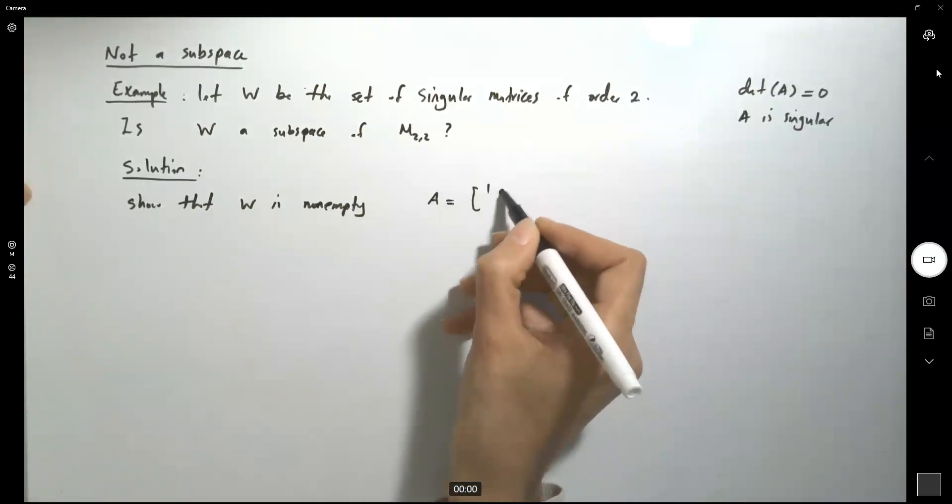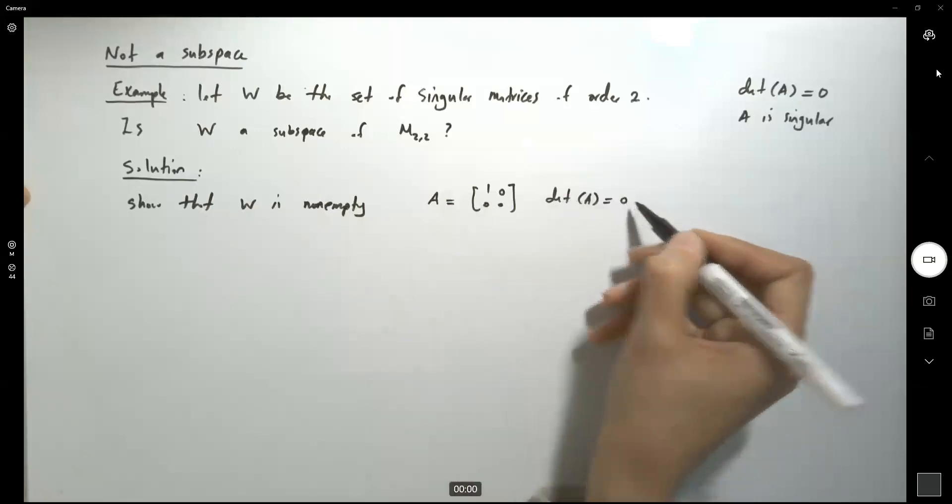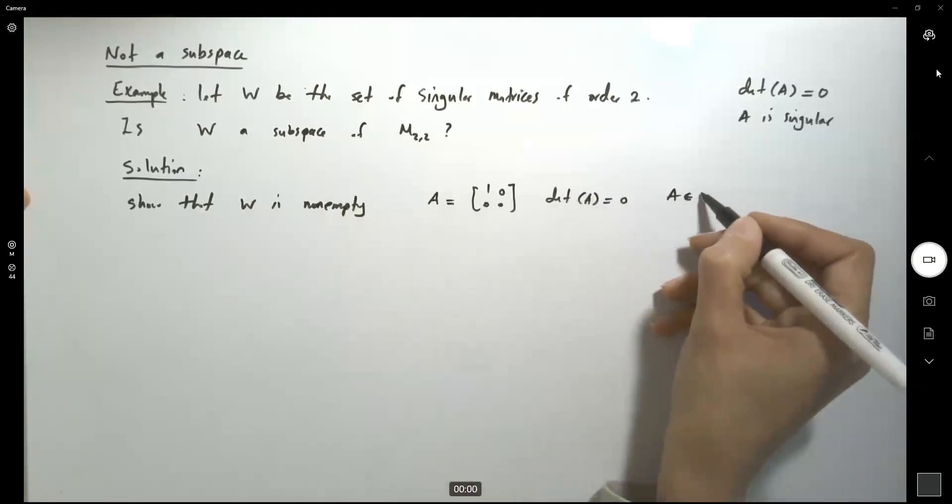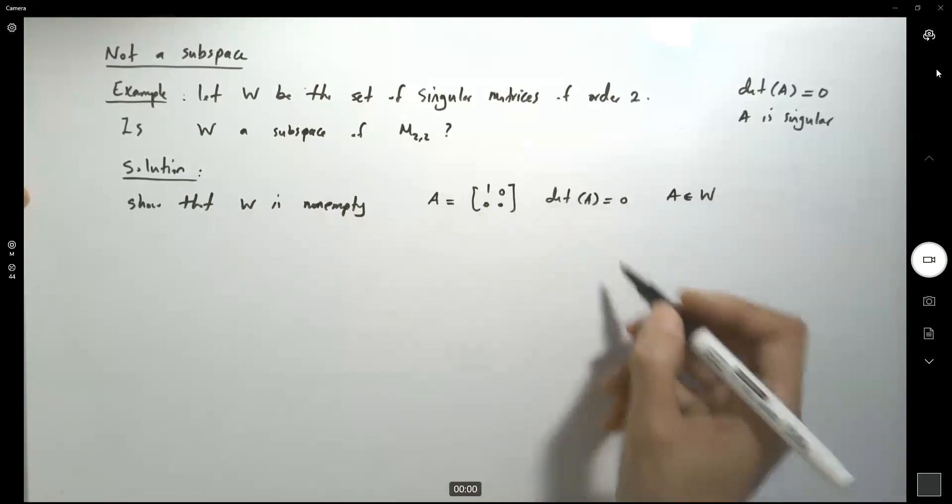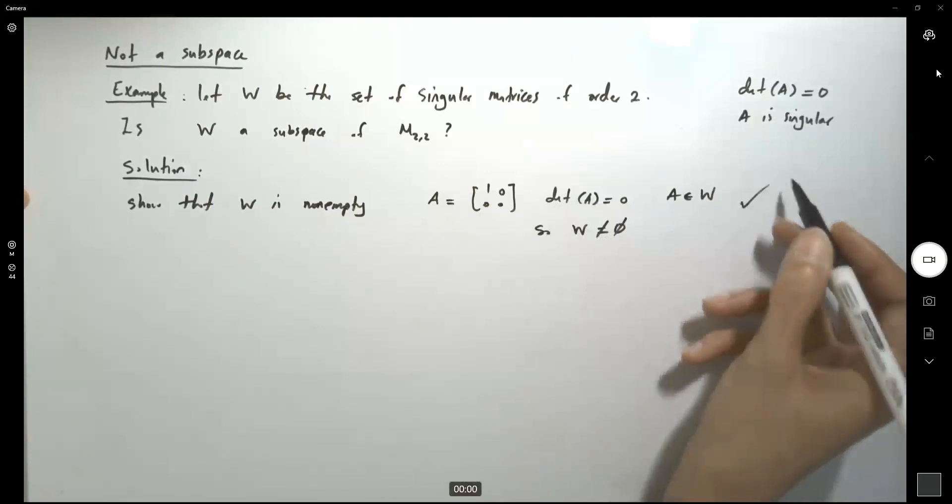A equals [1,0,0,0]. So the determinant of A is basically 0, so A is in W. So W is non-empty, we're good with the first step.